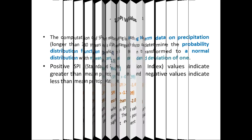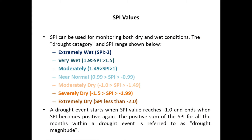SPI can be used for monitoring both dry and wet conditions. For extreme wet conditions, the SPI value should be greater than 2.0. For very wet conditions, SPI ranges from 1.5 to 1.99. For moderately wet conditions, SPI ranges from 1.0 to 1.49.